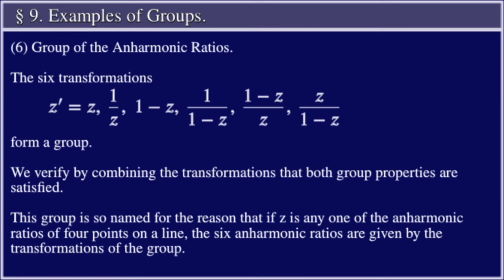6. Group of the Anharmonic Ratios. The six transformations z' = z, 1/z, 1 - z, 1/(1 - z), (z - 1)/z, z/(z - 1) form a group.